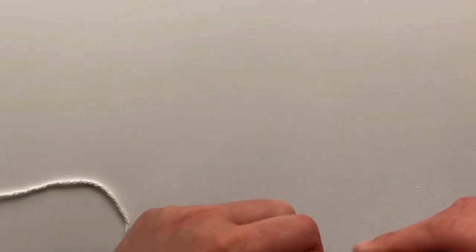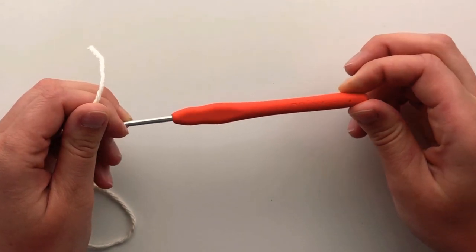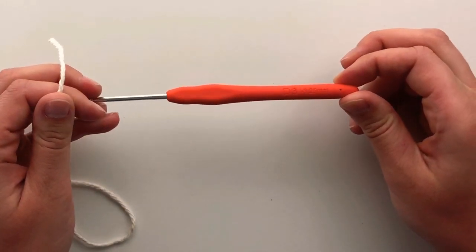You will need cotton worsted weight yarn, a 3.25 millimeter crochet hook, a darning needle, scissors, and a D swivel clasp.